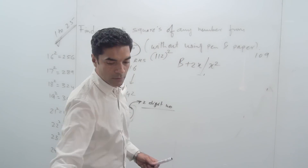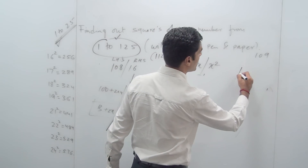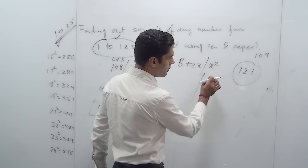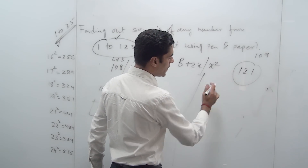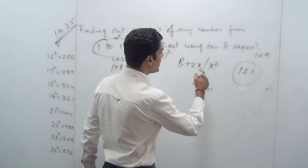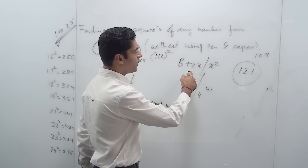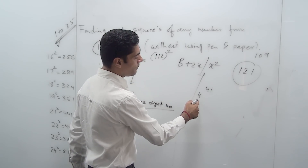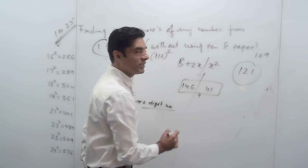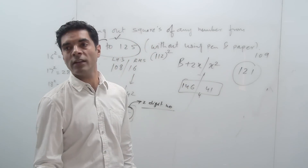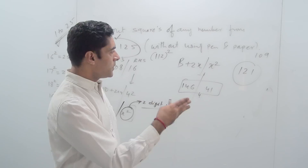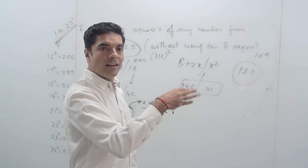If I wanted to find the square of 121, x is 21. 21² is 441. 21×2 is 42, plus 100 is 142, plus 4 carry forward is 146. So the answer is 14641. This is how you find the square of any number from 100 to 125.